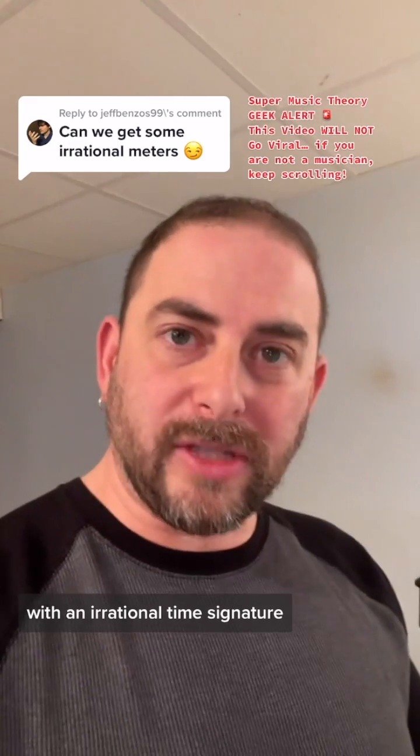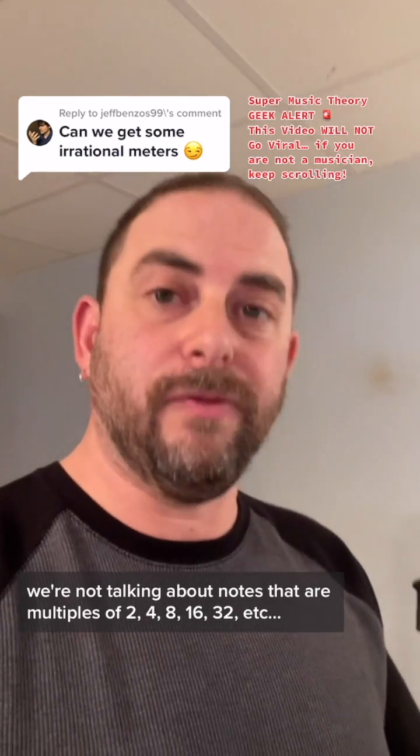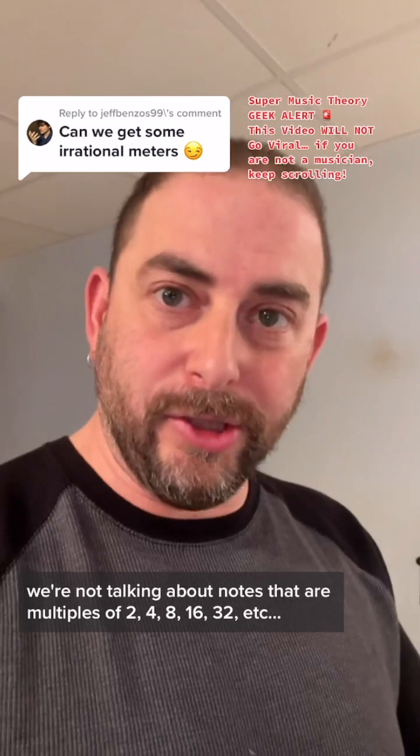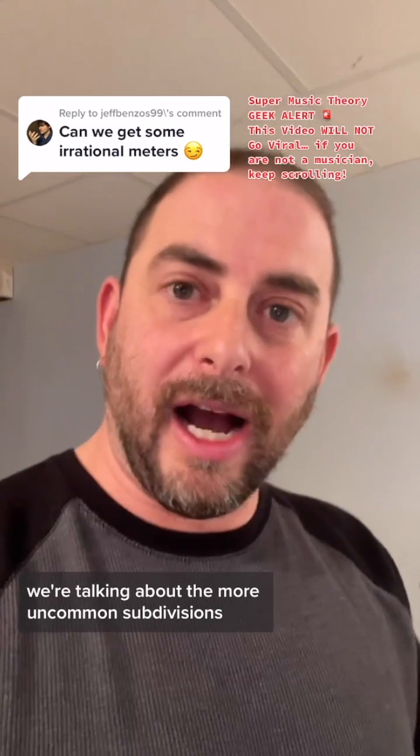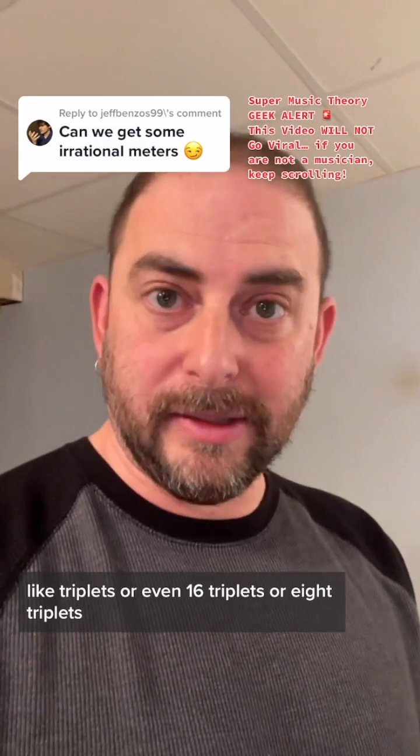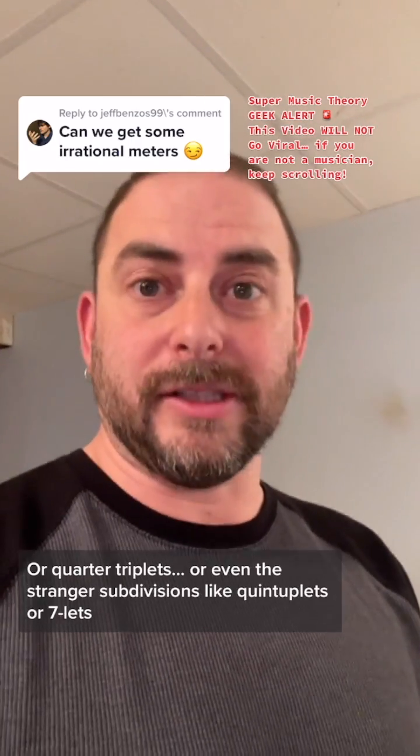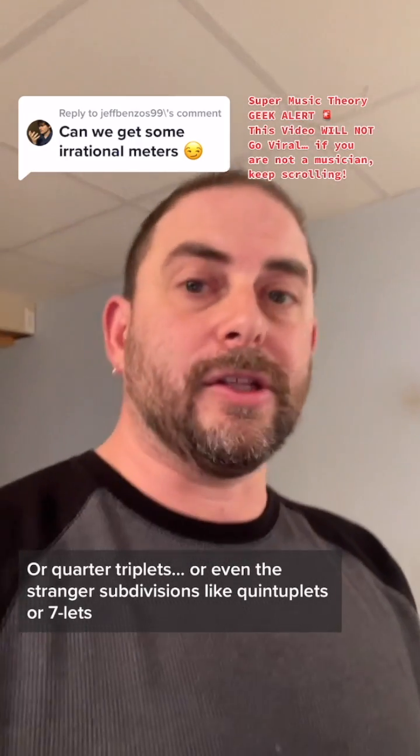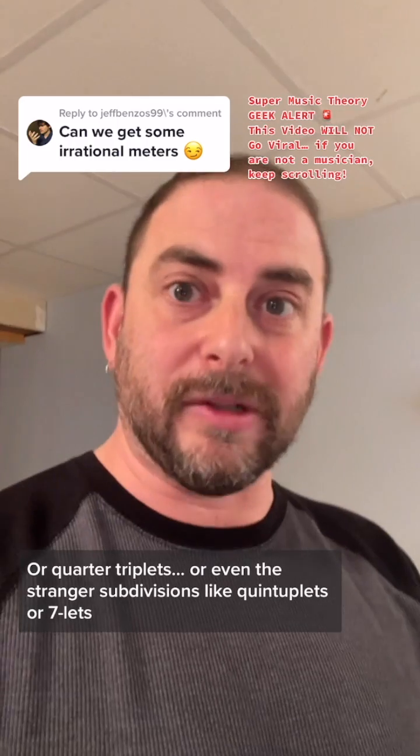With an irrational time signature, we're not talking about notes that are multiples of two, four, eight, sixteen, thirty-two. We're talking about the more uncommon subdivisions like triplets, or even sixteenth triplets, or eighth triplets, or quarter triplets, or even the stranger subdivisions like quintuplets or septuplets.